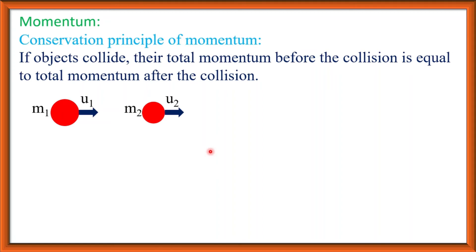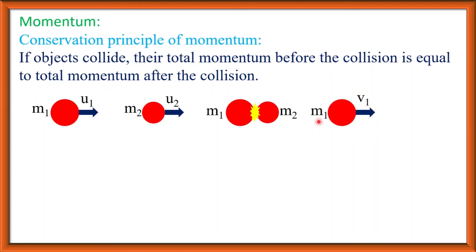As the velocity of the first body is more than that of the second body, after a certain time they will collide — M1 body hits the M2 body. After the collision, the two bodies will move with different velocities; their velocity will be changed. The changed velocity of the first body is V1 — it was moving with U1 but after collision its velocity is V1. And the velocity of the second body becomes V2. So before collision the velocities are U1 and U2, and after collision they are V1 and V2.